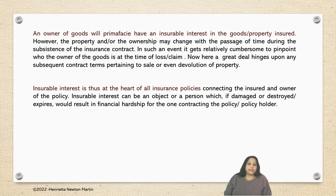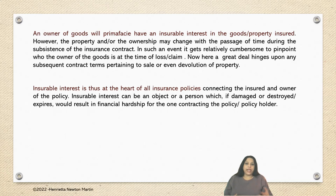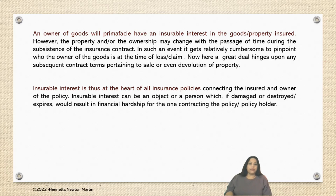An owner of goods, prima facie — that means on the face of it — has an insurable interest in the goods or property insured. However, the property or ownership may change with the passage of time during the subsistence of the insurance contract, because sometimes there can be a devolution of property or property may be transferred. For example, property X is covered under fire insurance, but the owner A dies and the property devolves to B, A's son, or A decides to sell the property. The fire insurance subject matter is the same, but there is a change in the ownership. So now who has an insurable interest — the person who has died or the person who is at present the owner — is a question.